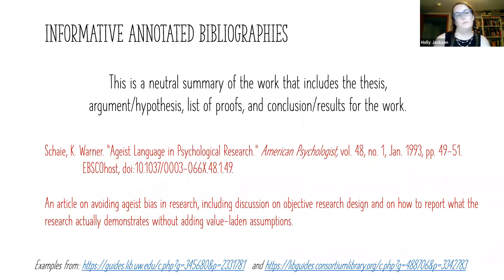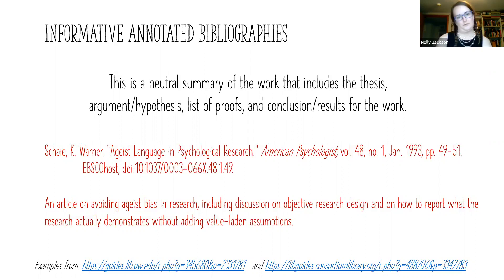Informative annotated bibliographies are a neutral summary of the work that includes the thesis, the argument or hypothesis, a list of proofs, and the conclusion and results of the work.